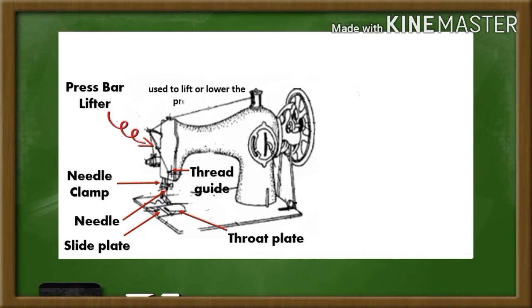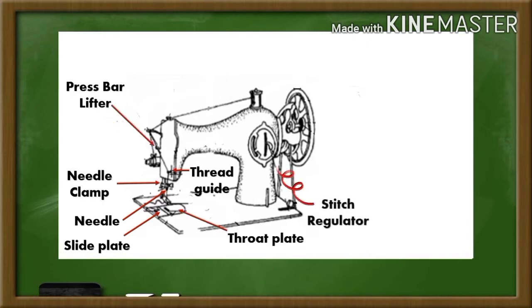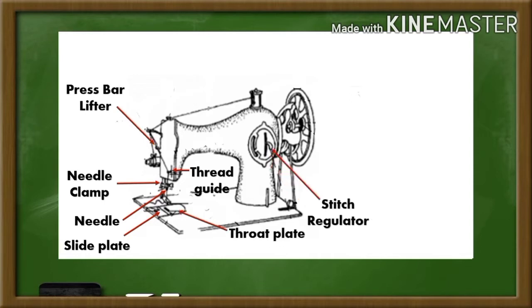Next, presser bar lifter. It is used to lift or lower the presser bar. Next, stitch regulator. It adjusts the length and evenness of stitches. Presser foot. It holds the material in place while sewing.